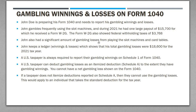In our example, John Doe is doing his 1040 and he gambles a lot using slots. During 2021 he had a large payout of $15,700. If you win a lot at a casino, they pay you out at the window and issue you a W-2G to report the winnings — they're obligated to do that under federal tax law. John's W-2G shows the payout of $15,700 and withholding taxes of $3,768.